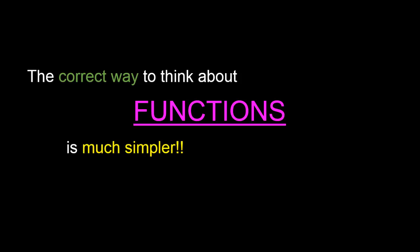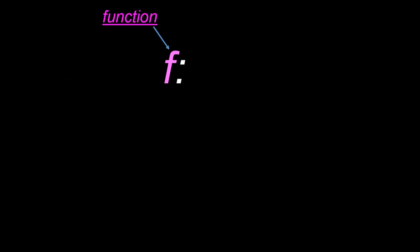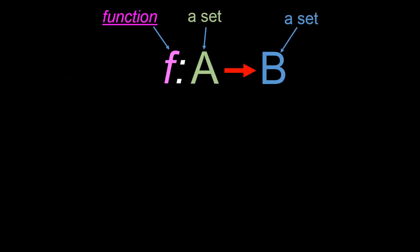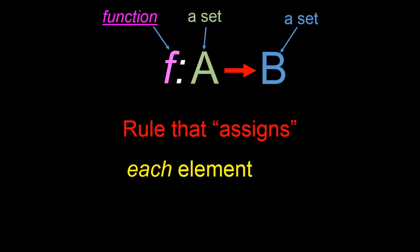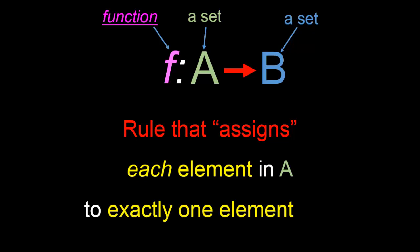As it turns out, this correct way of thinking about functions is much simpler than thinking of them as formulas or as machines. A function f from the set A to the set B is simply a rule that assigns each element in the set A to exactly one element in the set B.